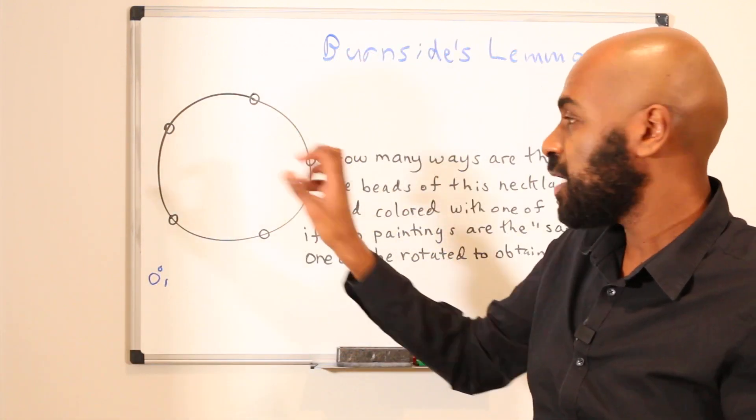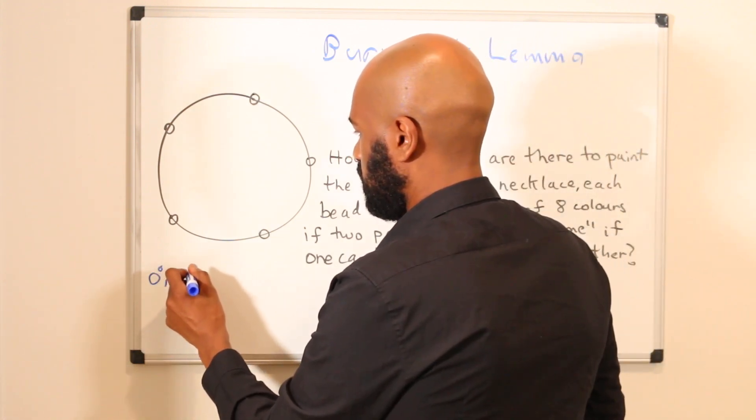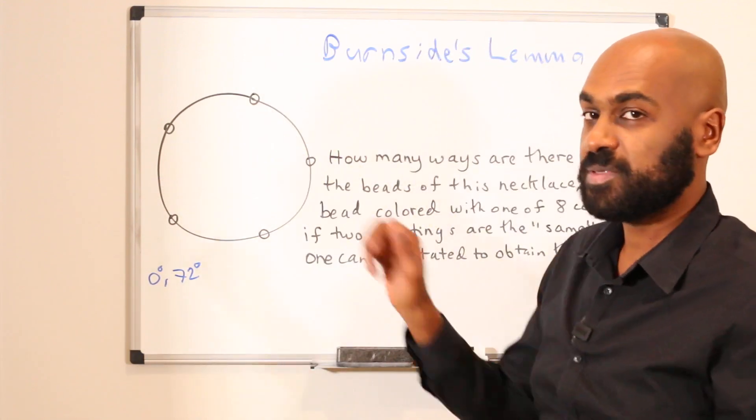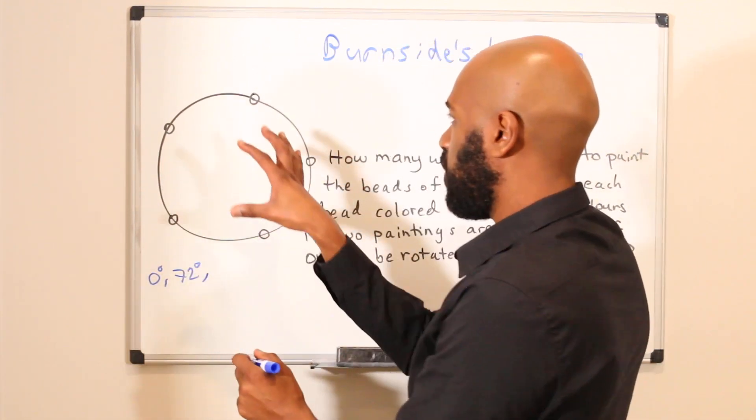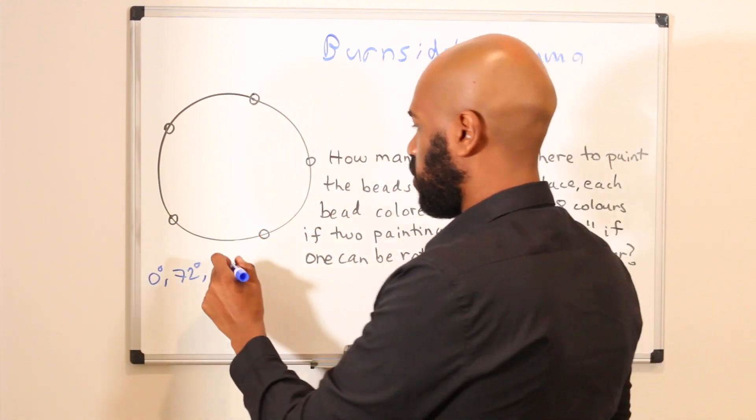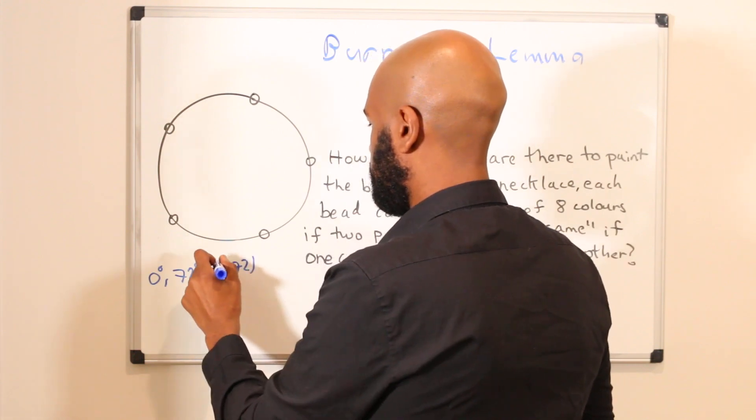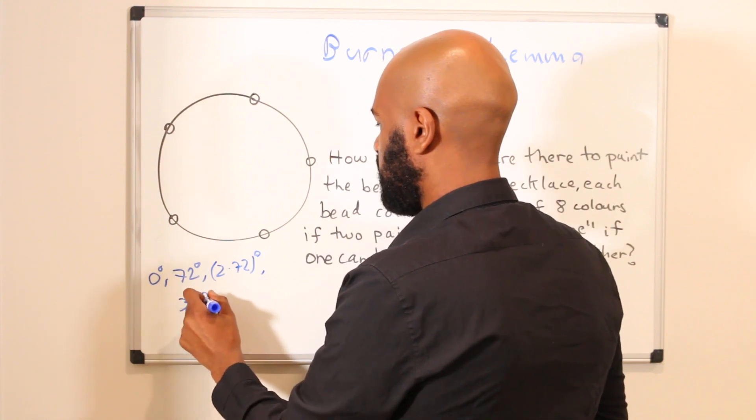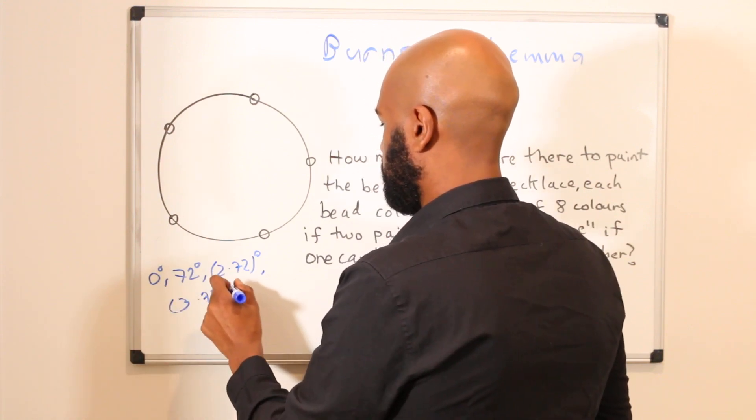There's the zero degree rotation which does nothing, there's turning clockwise 72 degrees, that's 360 divided by 5 degrees, that keeps the necklace intact, and then there are all the other subsequent rotations: 72 degrees again for a total of 144 or 2 times 72 degrees, 3 times 72 degrees, and 4 times 72 degrees.